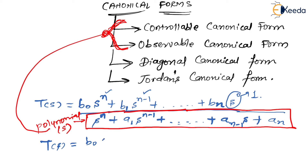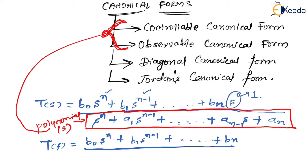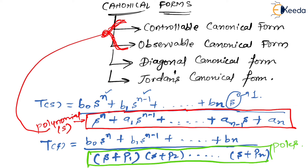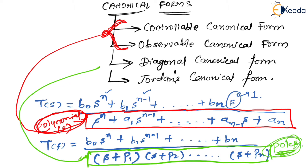Whereas if you have your transfer function with the denominator in the form of factors — that is, in the form of poles like (s + p₁)(s + p₂)···(s + pₙ) — then in such a case we are going to represent it using the diagonal and Jordan's canonical forms. The polynomial-in-s denominator (shown in red) corresponds to controllable/observable forms, while the factored-poles denominator (shown in green) corresponds to diagonal and Jordan's canonical forms.